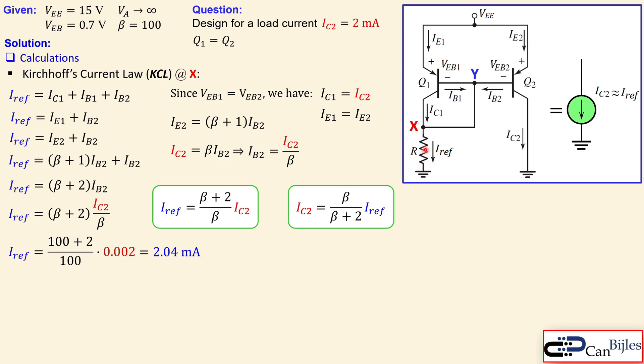Now once we know the IRF reference current here, we also know how much voltage is here required by using Kirchhoff voltage law. Because the Kirchhoff voltage law from this node all the way to the ground is actually VEE is equal to this current times the resistor here.